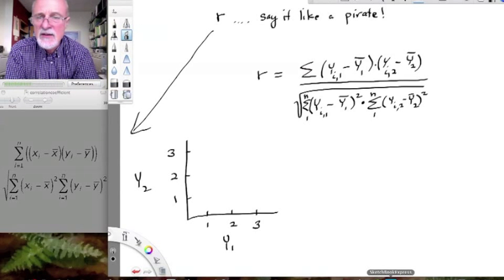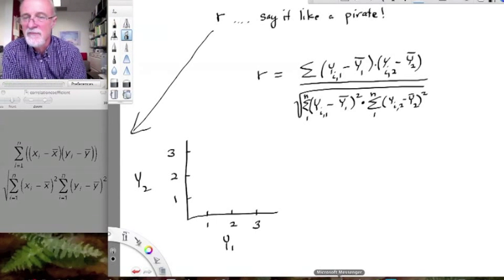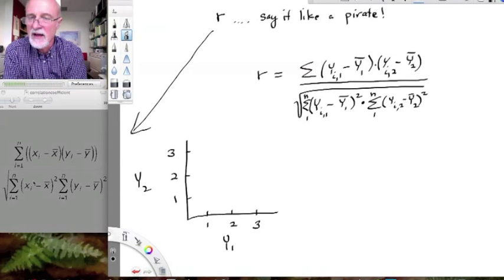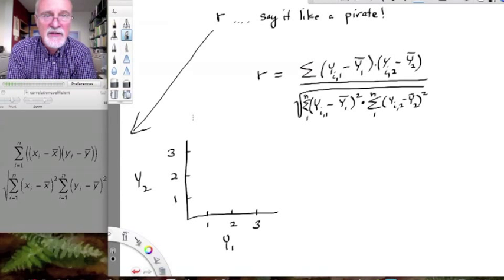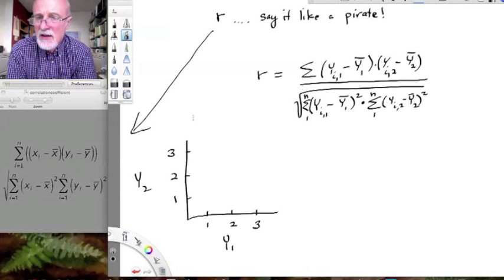But now let's deal with the nitty-gritty of the calculations. So I put the formula down here on the left side. You'll typically see if you type in correlation coefficient and you look for the formula, you'll typically see that one or some version of that. It might multiply through terms or whatever, but it'll be basically that.